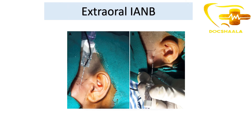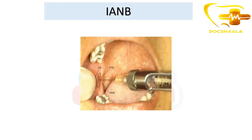Now let us look at the other technique options to distinguish them. For extraoral IANB (inferior alveolar nerve block), this is the injection site used. For the standard IANB, it is a very popular technique for anesthetizing the inferior alveolar nerve, and this is its injection site.